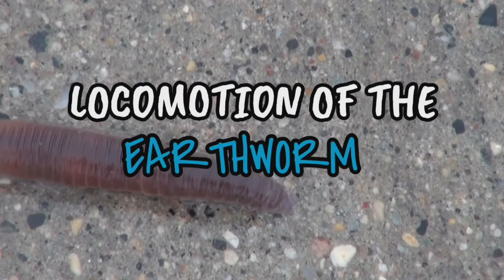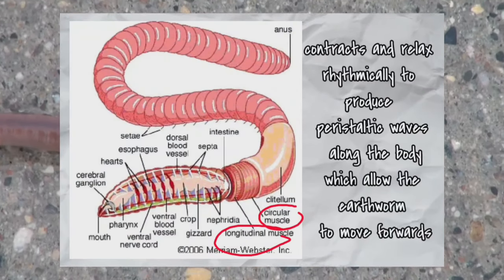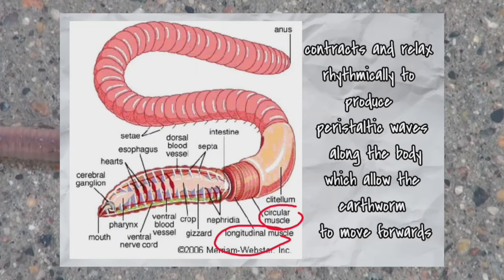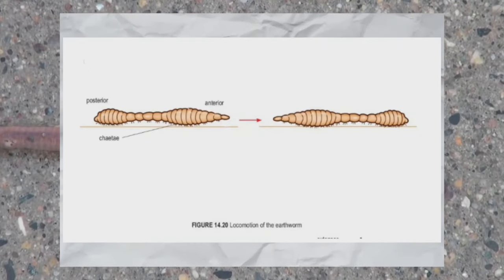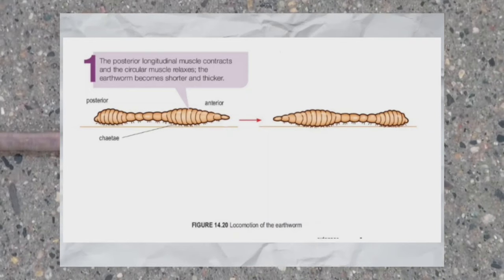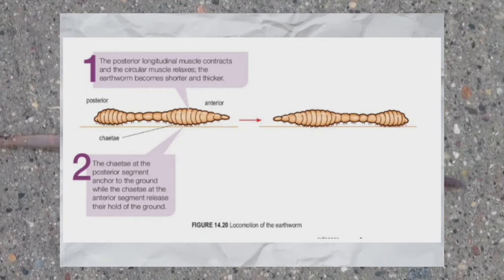In earthworm locomotion, the circular and longitudinal muscles contract and relax to produce peristaltic waves along the body, allowing the earthworm to move forward. The posterior longitudinal muscles contract while the circular muscles relax, causing the earthworm to become shorter and thicker. The setae at the posterior segment anchor to the ground while those at the anterior segment release.